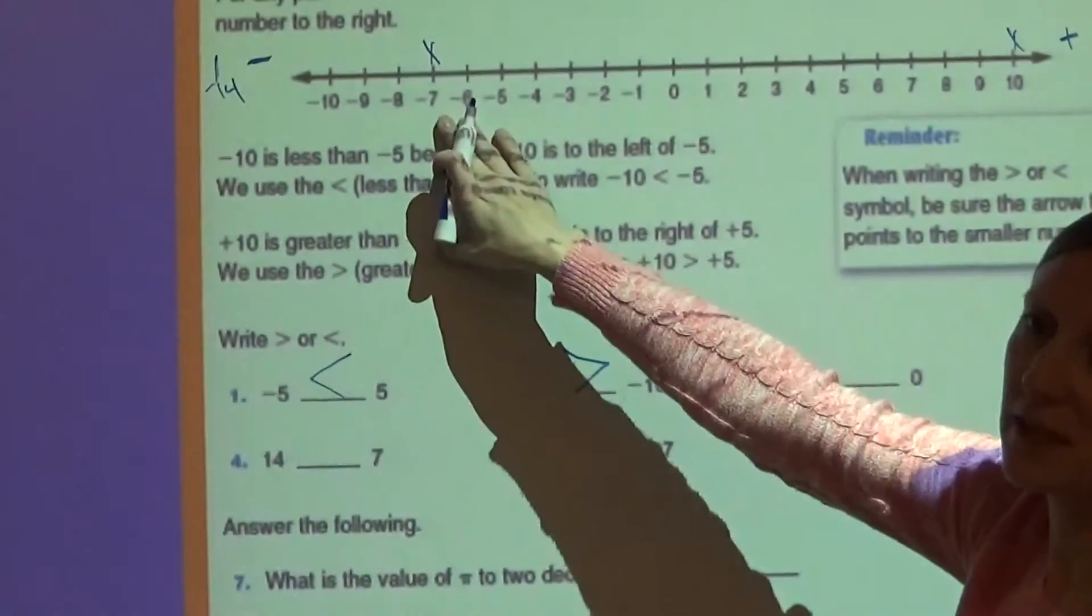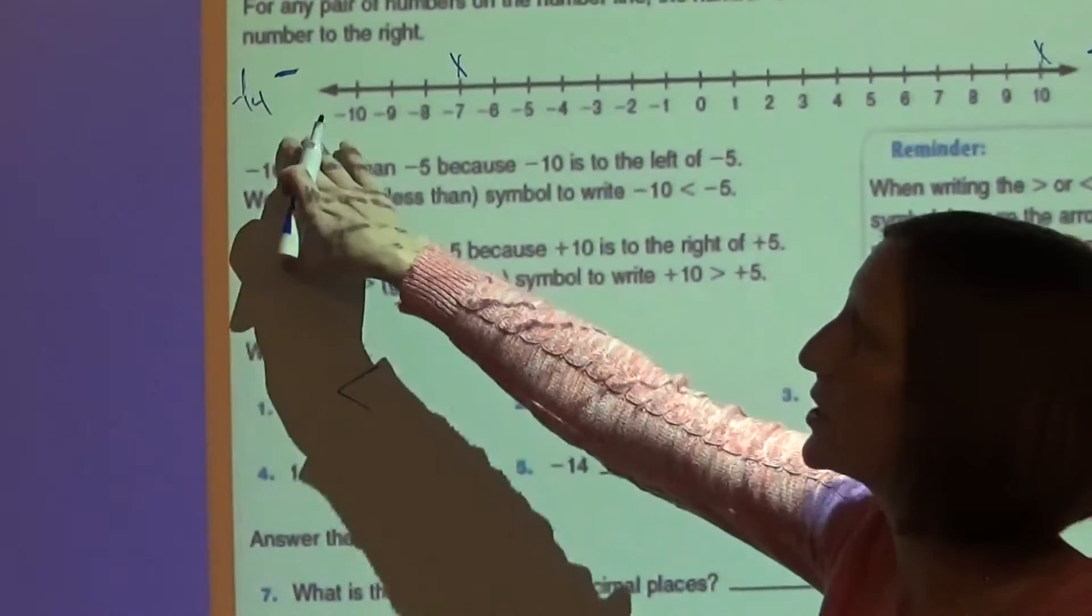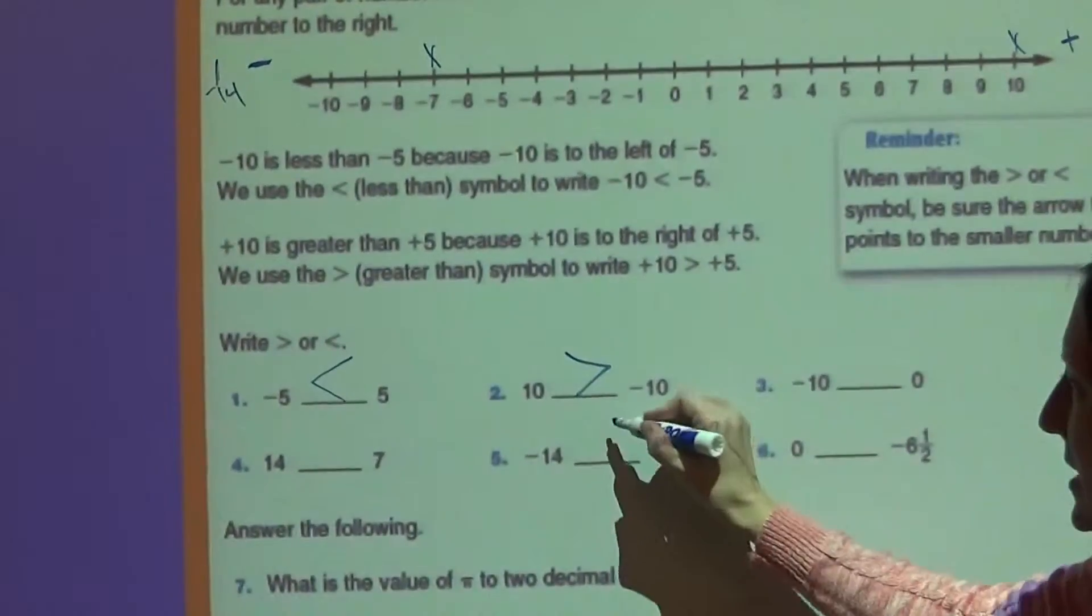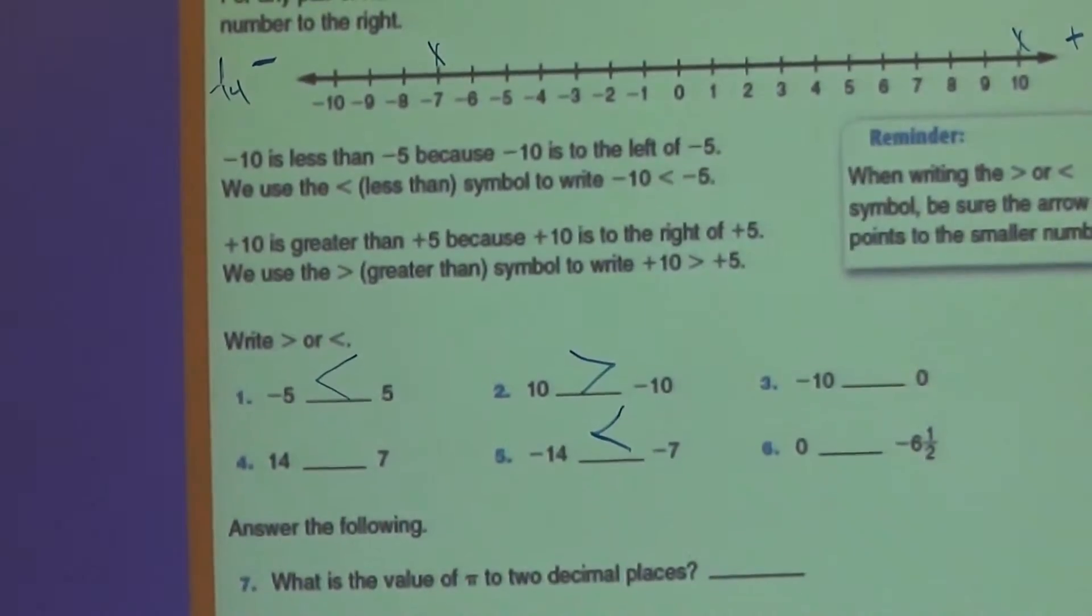So now, negative 7, even though 7 is smaller than 14 when we're talking about positive numbers, here, it's going to be less than. Because it's further over on the number line.